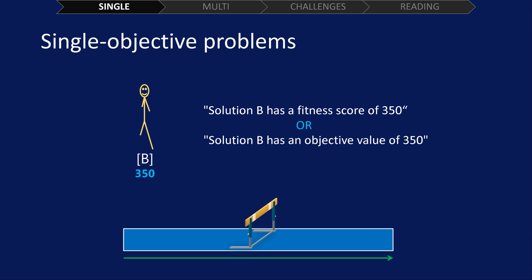Or, solution B has an objective value of 350. It's important to know this when moving from single objective problems to multi-objective problems.